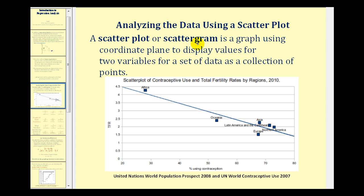When analyzing data, the first step is usually to create a scatter plot or scattergram. This is just a graph using the coordinate plane to display the values of the two variables as a collection of points, as we see here as blue squares. And when creating a scatter plot, it's important to remember to label the x and y axes to know what they represent. So here the x-axis represents the percent using contraception, and the y-coordinate represents the total fertility rate of the given country.